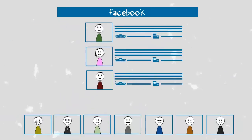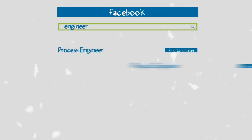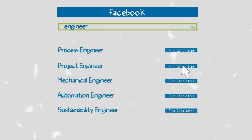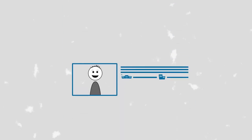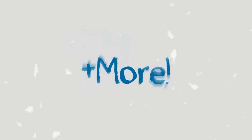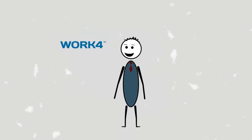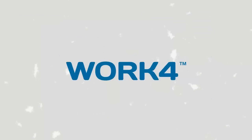Work4's Graph Search Recruiter makes sourcing simple. We import the jobs from your ATS, search for the candidates who fit your job descriptions, and even give your team a way to track who applies. All you have to do is click a button to discover and contact local talent, talent connected to your employees, talent who likes your company, talent who works in your industry, and more. It's time to make the smart choice. Start sourcing on Facebook with Graph Search Recruiter from Work4 today.